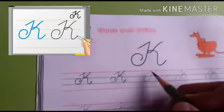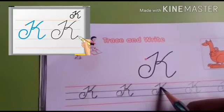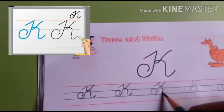Slant line till the third line. Come down with a curve line till the third line and turn it back side. Put your pencil point at the top line and come down with a curve line, and again curve line till the third line and little bit go up. This is K.